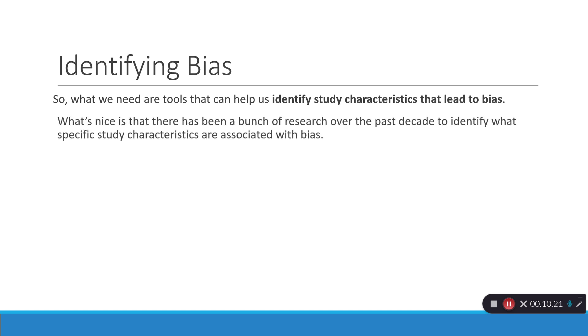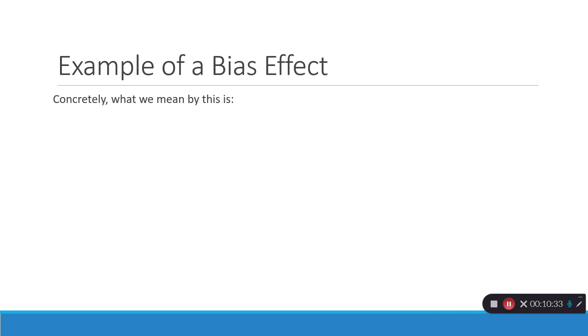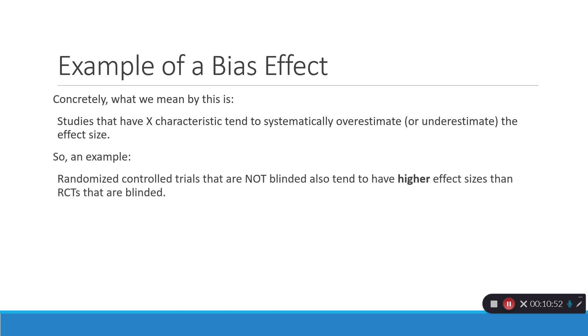Now, what's nice is there has been a ton of research over the past decade and a half to identify what specific study characteristics are associated with bias. So, basically, we don't have to guess on this. Concretely, let's think of an example of a bias effect. Studies that have a particular characteristic would tend to systematically overestimate or underestimate the true effect size. For example, randomized control trials that are not blinded tend to have higher effect sizes than RCTs that are blinded. Now, this gives us a pretty clear sense that failure to blind is associated with a systematic overestimation of effect or a systematic bias toward overestimation.